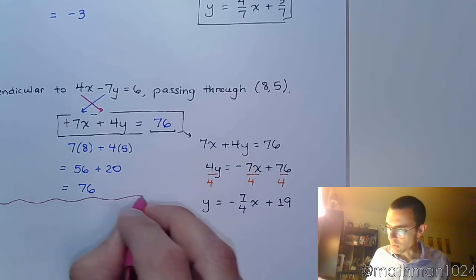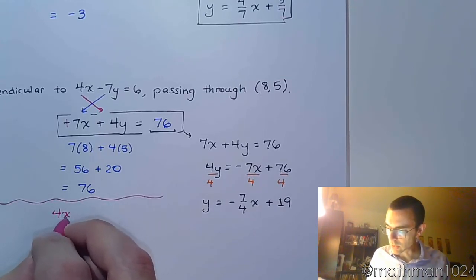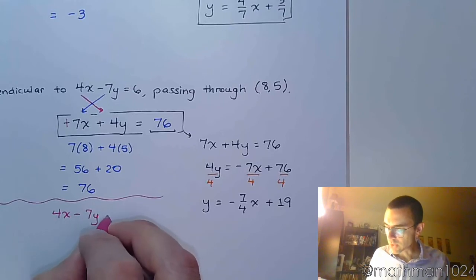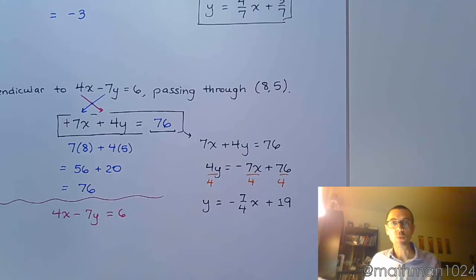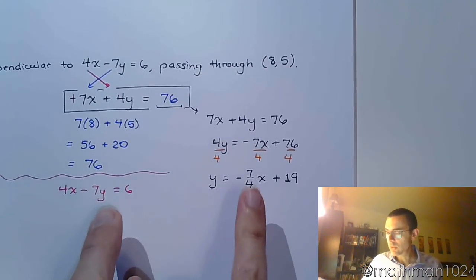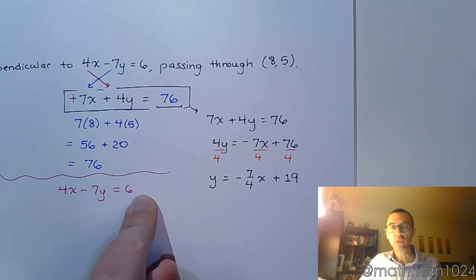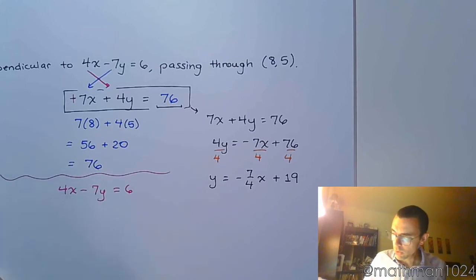I want us to see what would happen if I took 4x minus 7y equals 6 and I'll solve this guy for y because these two equations, their slopes aren't supposed to be the same, they're supposed to be negative reciprocals. Well, let's see what happens.